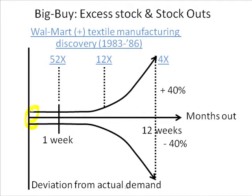They found out that the deviation — with time on the horizontal axis going out to three months or more, and deviation on the vertical axis — when they only had to forecast a day out, the deviation was very small. And what's more, they could instantly correct it. So if you were one shirt long or short, that would be reflected in the next day of replenishment activity. So fill rates stayed very high, but there was no excess stock.